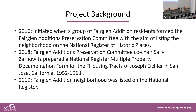These concepts were initiated in 2016 when a group of Fairglen Editions residents formed the Fairglen Editions Preservation Committee to try to get the neighborhood listed on the National Register of Historic Places. In 2018, Sally prepared the National Register multiple properties documentation for the housing tracks of Joseph Eichler in San Jose, California, 1952 to 1993. That was a wonderful nomination because it provides all the documentation to allow other Eichler neighborhoods in San Jose to also list their neighborhoods on the National Register.